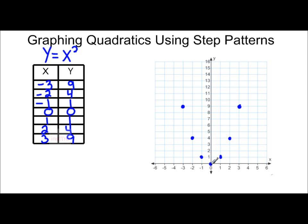So if I now connect these points, we will have a lovely parabola for the relation y equals x squared. I'm going to label that y equals x squared. If I'm looking at the step pattern for this relation...